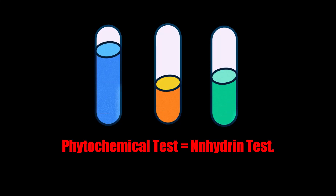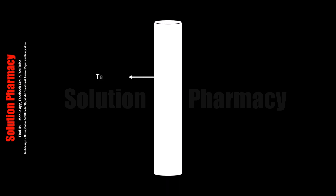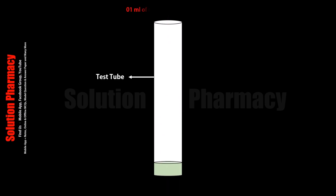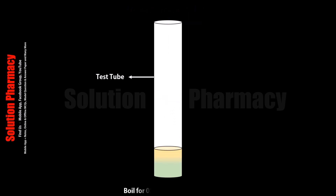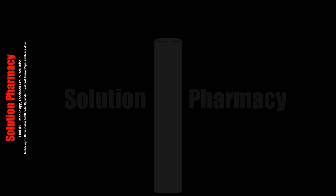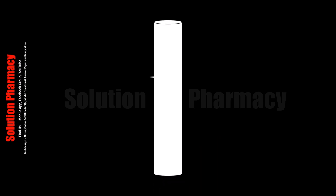Hello friends, welcome to the channel Solution. Today in this video we will tell you about the ninhydrin test. The ninhydrin test is the general identification test for amino acids. It means if we want to check the presence of amino acid in any sample, then we have to perform the ninhydrin test.